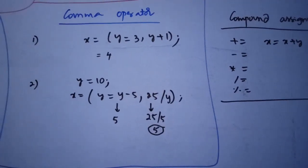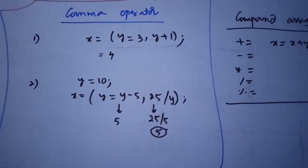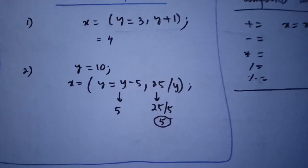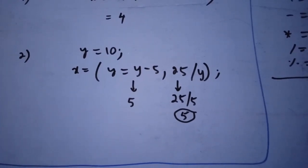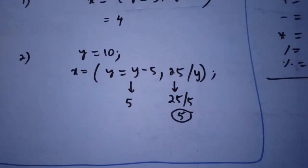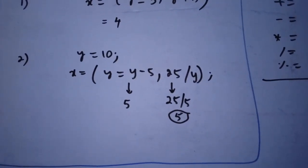So comma operator. Look at the first program. Y is equal to 3 comma y plus 1. That is 3 plus 1 is 4. The second example. Y is equal to y minus 5. Y is 10. So 10 minus 5 is 5. And this 5 is substituted in 25 by y. So 25 by 5 is 5. And 5 is assigned to x.